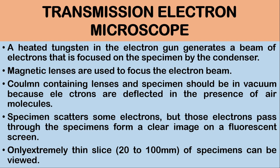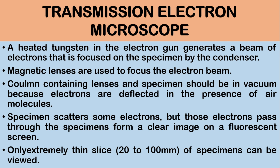Transmission electron microscope. A heated tungsten in the electron gun generates a beam of electrons, which is focused on the specimen by the condenser. Magnetic lenses are used to focus the electron beam. The column containing lenses and specimens must be in vacuum, because electrons are deflected in the presence of air. Specimens scatter some electrons, but those that pass through the specimen form a clear image on a fluorescent screen. Only extremely thin slices — 20 to 100 nm — of specimens can be viewed using the transmission electron microscope.